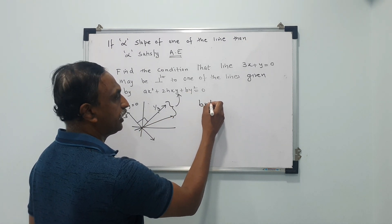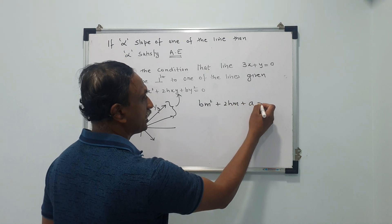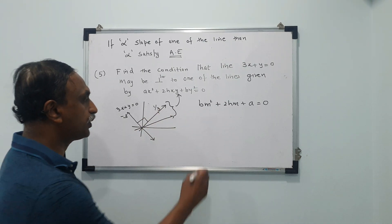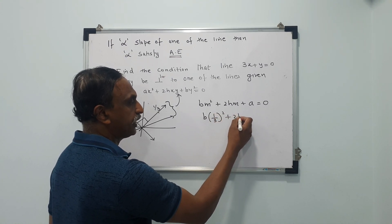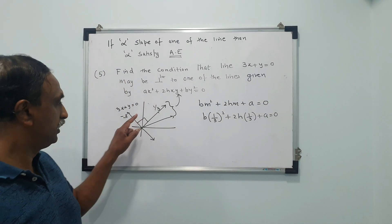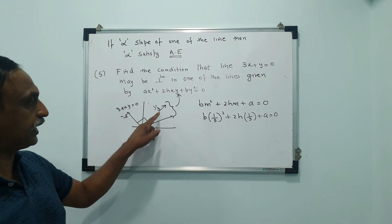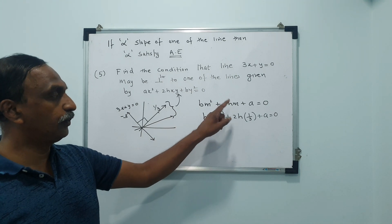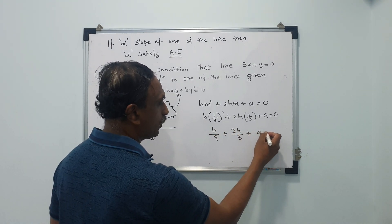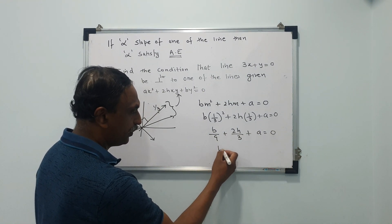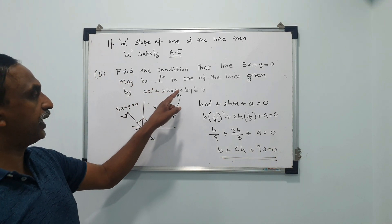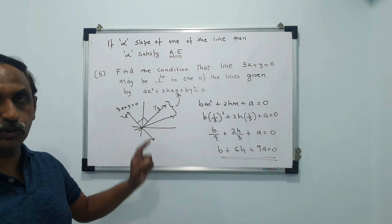The auxiliary equation is bm² + 2hm + a = 0, and the value of m is 1/3. Substituting: b(1/3)² + 2h(1/3) + a = 0, which gives b/9 + 2h/3 + a = 0. Multiplying throughout by 9: b + 6h + 9a = 0. This is the required condition to be satisfied by a, b, and h so that this line is perpendicular to one of the lines.